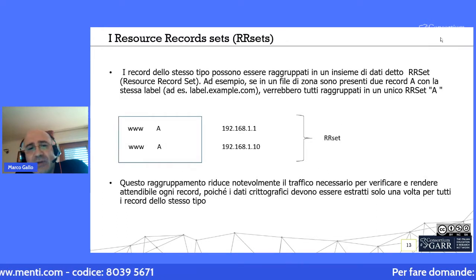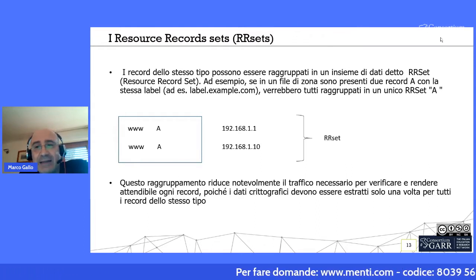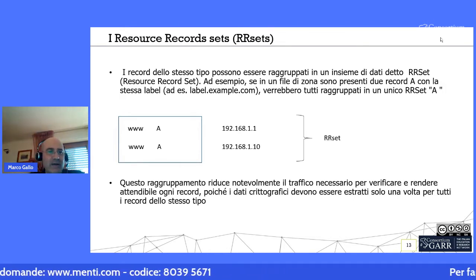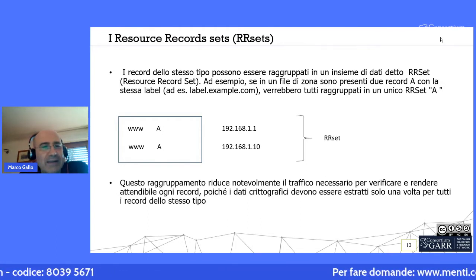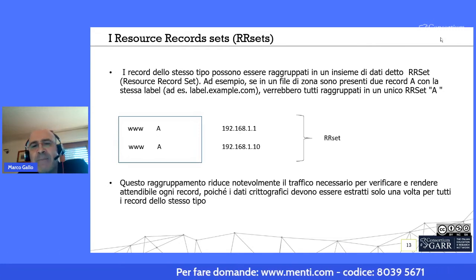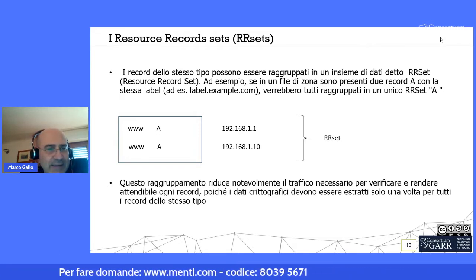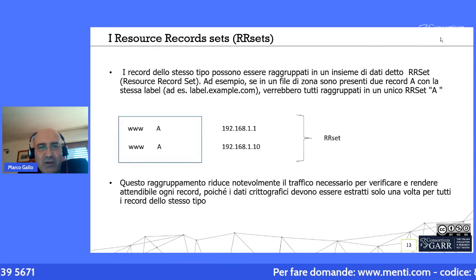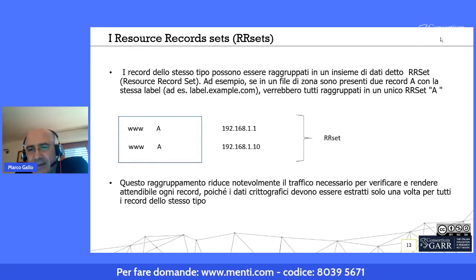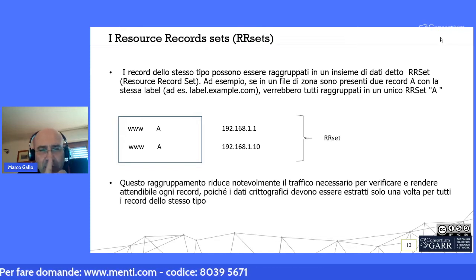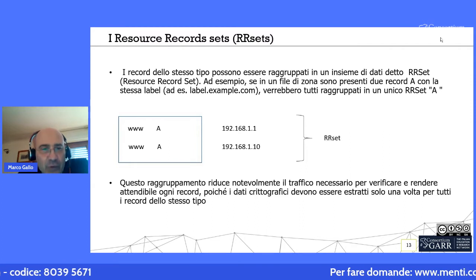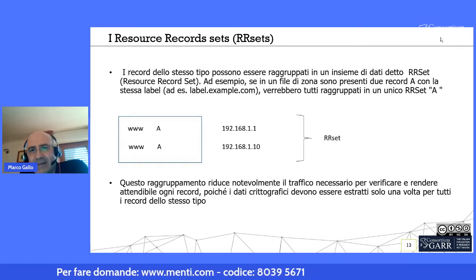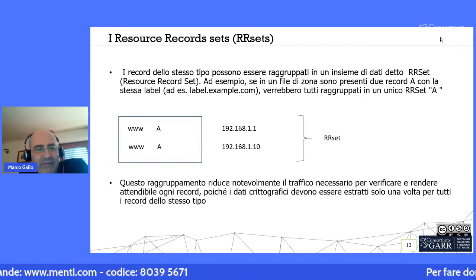I vari record possono essere raggruppati in un insieme detto resource record set (RR set): se ad esempio ci sono più record con la stessa label www associati a indirizzi diversi tramite record A, si possono raggruppare in un RR set. Questo raggruppamento riduce notevolmente il traffico necessario per le verifiche, poiché viene associata una sola firma digitale all'intero resource record set, riducendo il traffico dedicato ai dati crittografici.